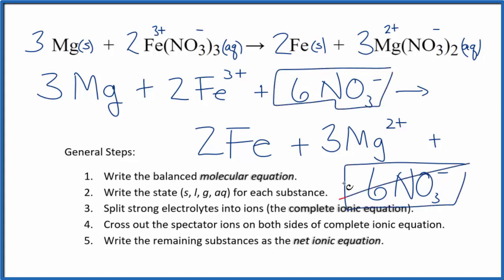So let's get rid of those, those are spectator ions. Everything else is unique, so this is the net ionic equation for Mg plus Fe(NO3)3.